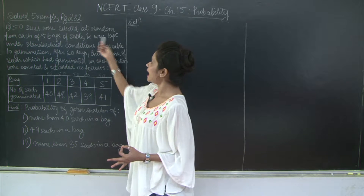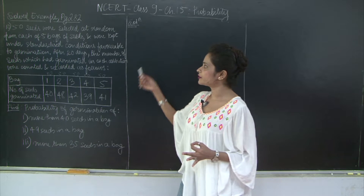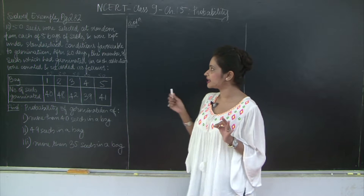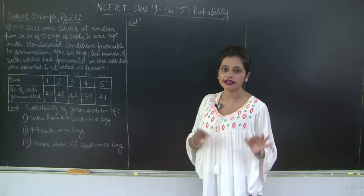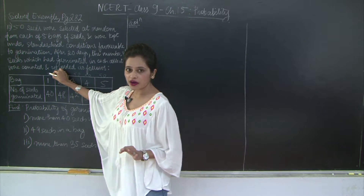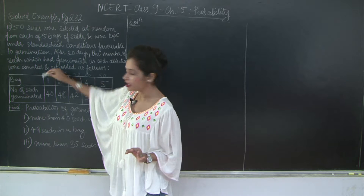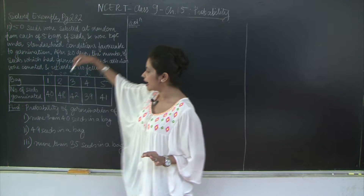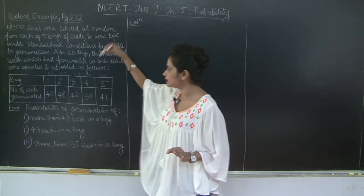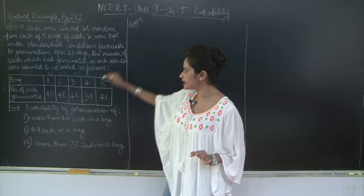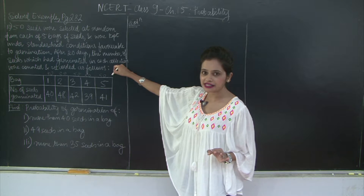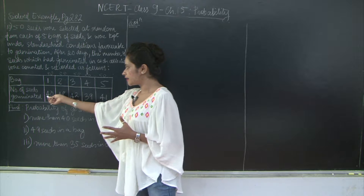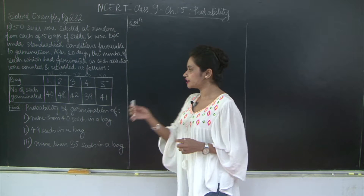These seeds were kept under standard conditions favorable for germination. After 20 days, the number of seeds which had germinated in each bag were counted and recorded. Out of 50 seeds in bag 1, 40 germinated; bag 2 had 48; bag 3 had 42; bag 4 had 39; and bag 5 had 41 germinated. So the number of seeds that germinated varied across the different bags.